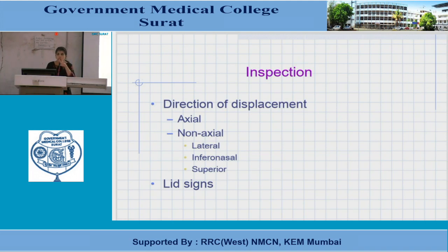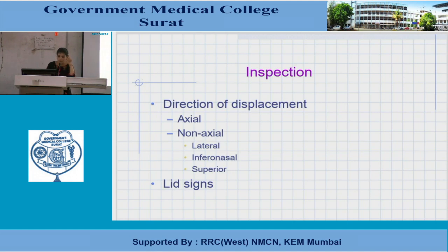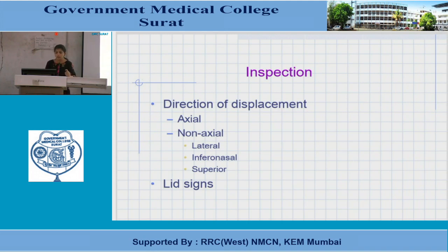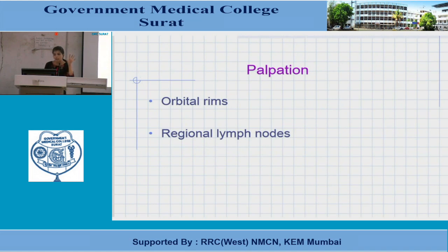Abaxial or non-axial proptosis involves lateral displacement of the eyeball, such as when a tumor arises from the medial orbit like a lacrimal sac tumor. Inferonasal displacement occurs when the tumor arises from the lacrimal gland. Superior displacement of the eyeball occurs due to pressure from a maxillary sinus tumor. We also look for eyelid signs: lid lag and lid retraction in thyroid orbitopathy, and S-shaped deformity of the upper eyelid in plexiform neurofibroma.